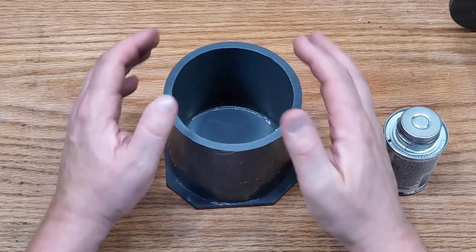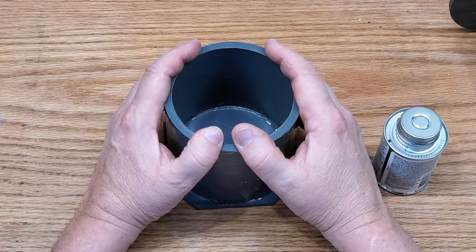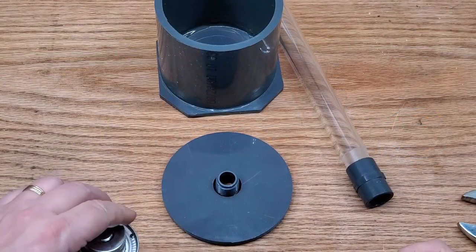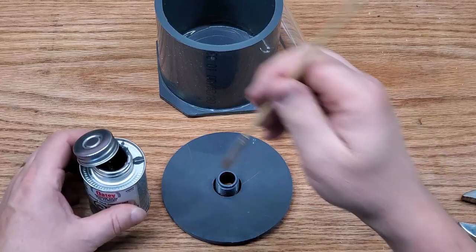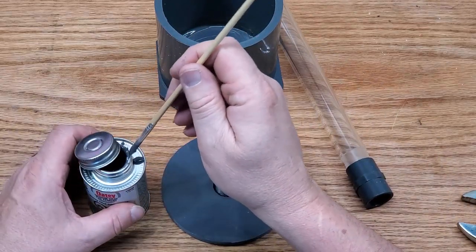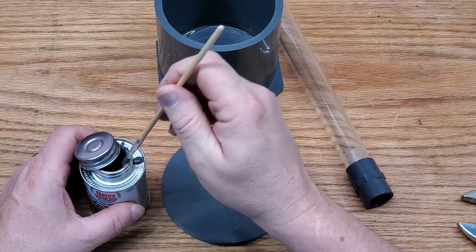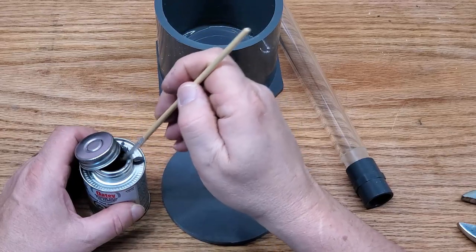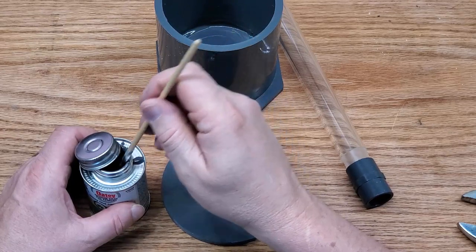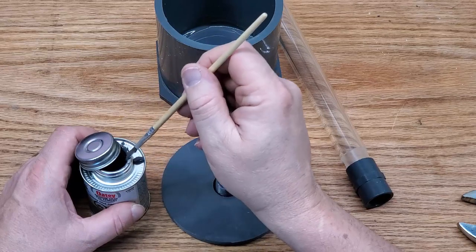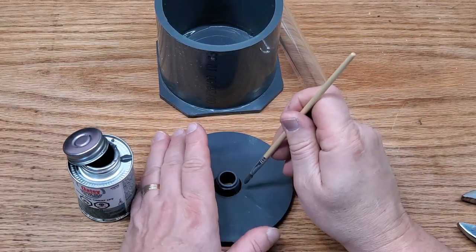You have to get enough on there to ensure there's enough of a weld once this dries for it to handle being in the lathe. But the nice thing is, because it's going in the lathe, it doesn't matter. All that stuff will get machined off. This piece of PVC is really old.